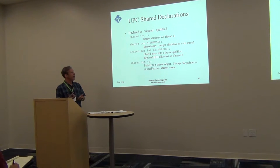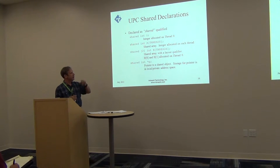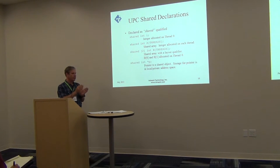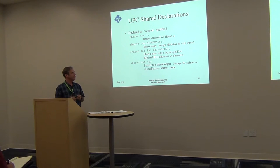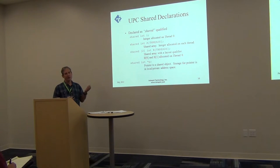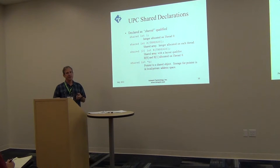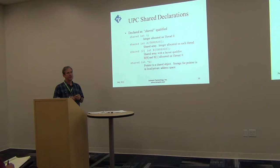If threads equals 5 and you declare 2*THREADS elements, you get 10 elements wrapping around across all threads. The blocking factor — expressed as a number in brackets in the declaration — is a layout qualifier, also called a block size, indicating that elements are distributed in chunks rather than one at a time. The default block size is 1, meaning each element is distributed individually; a block size of 2 means elements are distributed in chunks of 2 across threads. There's also a conventional pointer-to-shared declaration, capable of pointing anywhere in the global address space.